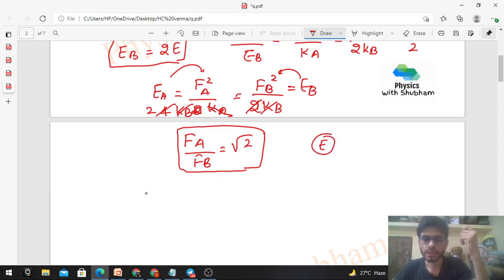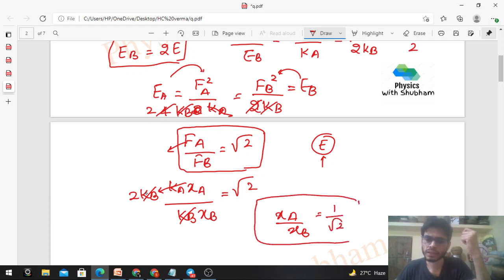Or kya pooch sakta hai? Mahalo is tarah ka bhi question ban sakta hai ki same energy ke liye, is case mein apne energy same kar di. Now he may ask you ki elongation ka kya ratio hoga for the same energy. So FA kitna hoga? KA into XA, right? Aur FB kitna hoga? KB into XB. So yahan se again KB ko hum, nahi, KA ko hum likh sakte 2 times of KB. Yahi de rakha hai. So yahan se dekho, kitna aa raha hai? XA upon XB, that will be 1 upon root 2. So is tarah ki ratio wo pooch sakta hai.